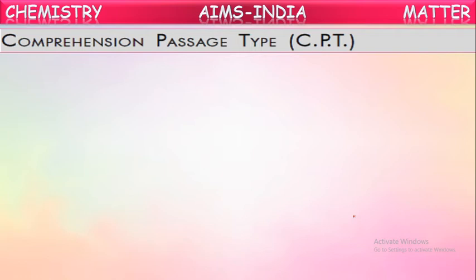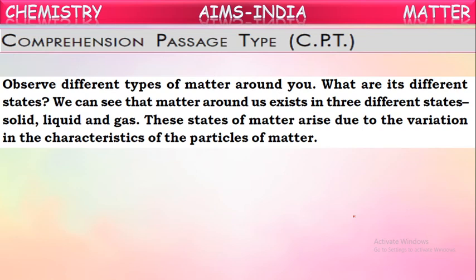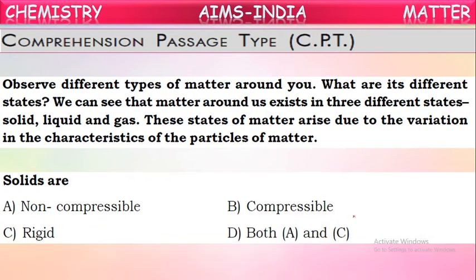Now a comprehension paragraph: Observe different types of matter around you. Matter exists in three major states — solids, liquids, and gases. These states arise due to variation in the characteristics of the particles of matter. Question 1: Solids are — non-compressible and rigid. Both options are correct, so the answer is D: both non-compressible and rigid.